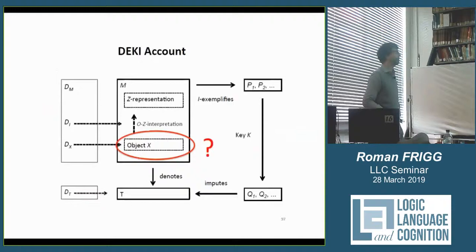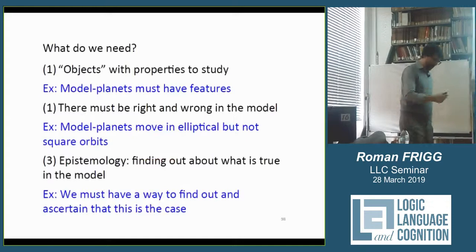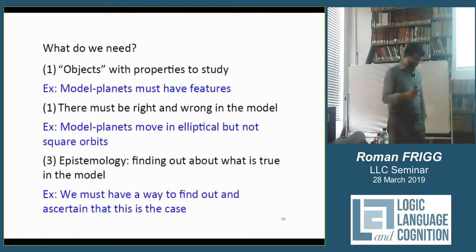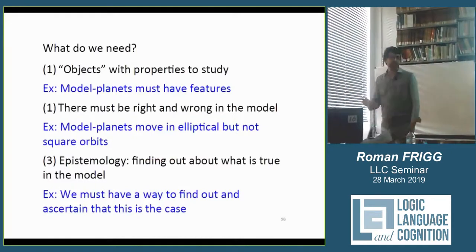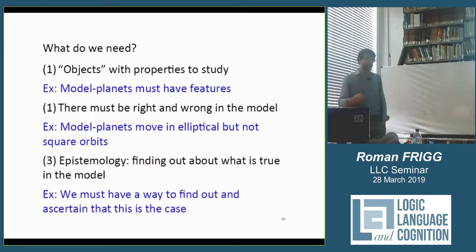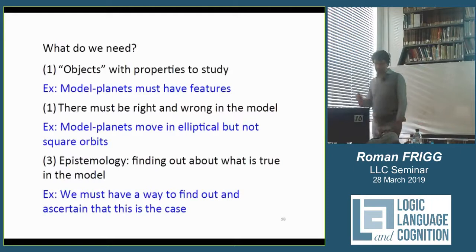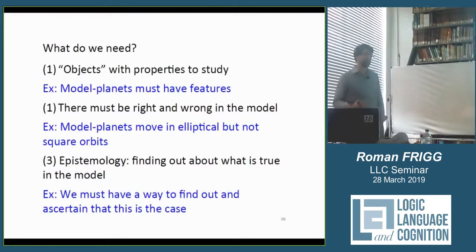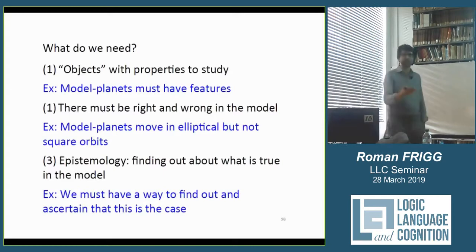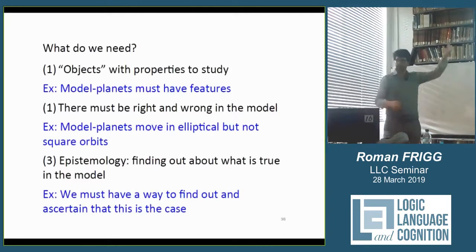The way to think about the problem is that you must put something there that can meaningfully be said to have certain features. Model planets must have certain features — they move in certain kinds of orbits but not others. There must be right and wrong in that model; you must be able to make claims of the form 'it is true in the model that such-and-such' and 'it is false in the model that such-and-such.' And you must have a way to find out — there must be an epistemology for these objects — because if you can't find out what properties the model has, the model becomes useless.